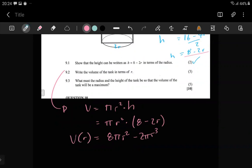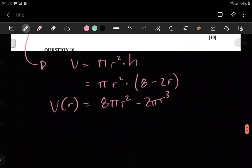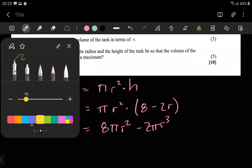This is the volume equation in terms of r. Now for three, for five marks which is the main event, they said what must the radius and the height of the tank be so that the volume of the tank will be a maximum.